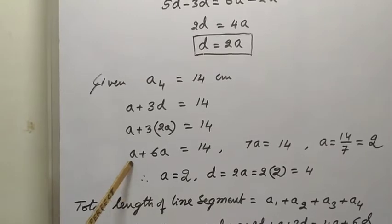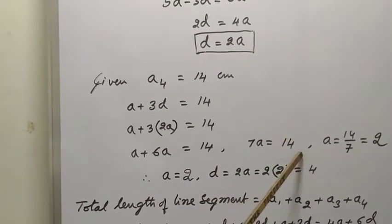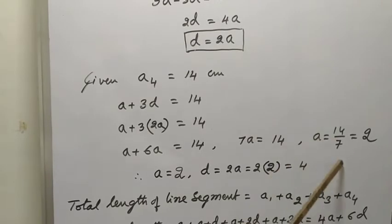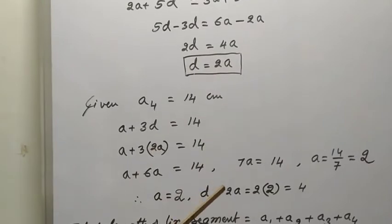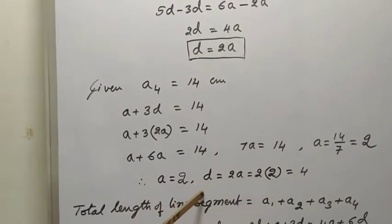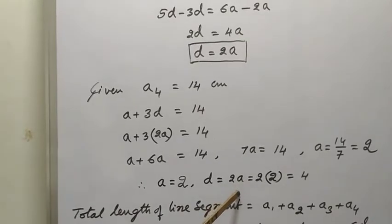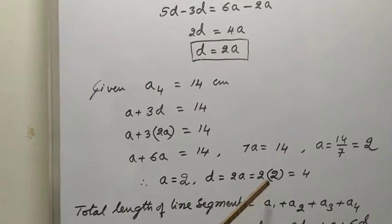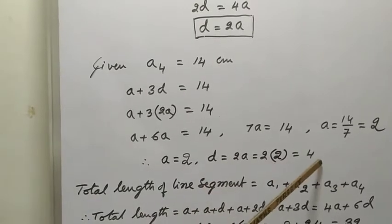Now, A plus 6A gives 7A equals 14. Cross multiplying, A equals 14 divided by 7, which equals 2. So we got the value of A equals 2. Now substitute this in equation 1: D equals 2A equals 2 times 2, therefore D equals 4.